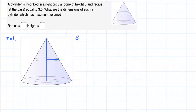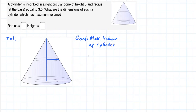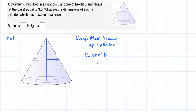First, let's clearly state the goal. The goal is maximizing the volume of the cylinder. That volume should be equal to the area of the base of the cylinder, which we can write as pi r squared, where r is the radius of the cylinder, times h, where h is the height of the cylinder.